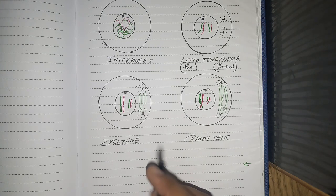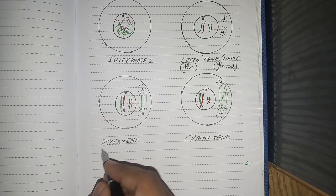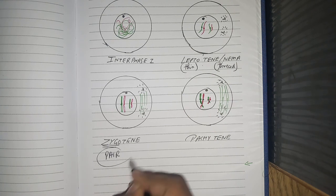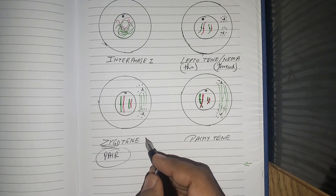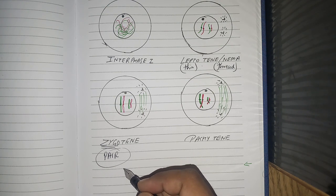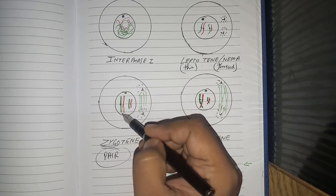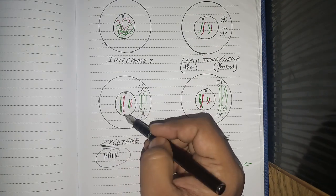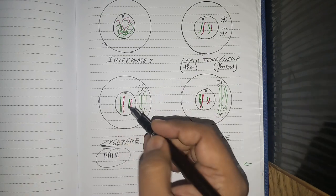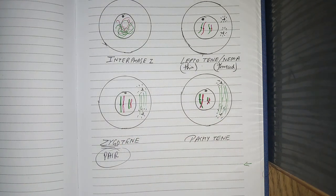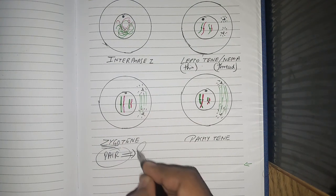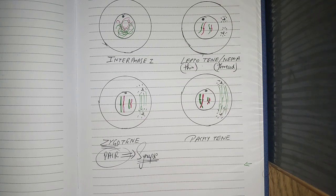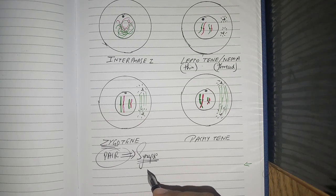Next stage is zygotene. Zygo means pair. So simple to remember. And tene is thread. What happens in zygotene is the chromosomes from father and the chromosome from mother, they pair with each other. In our case, there are 23 pairs. I have shown only two. This pairing is also called as synapse.